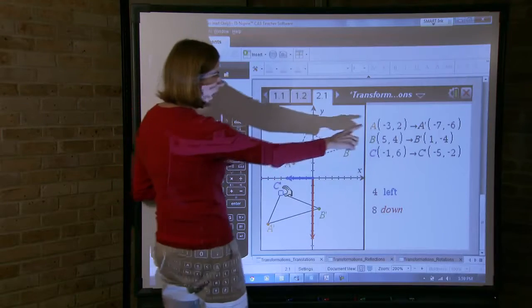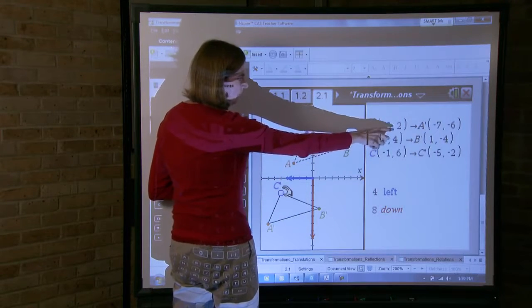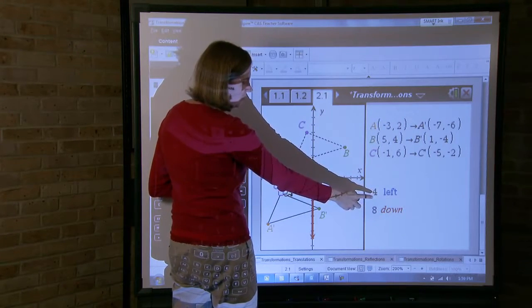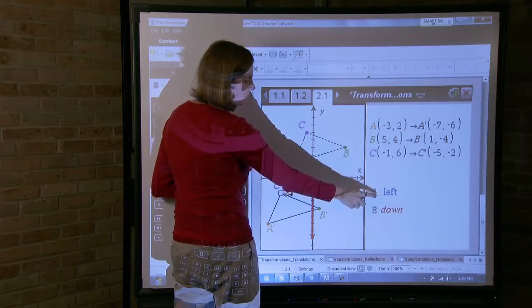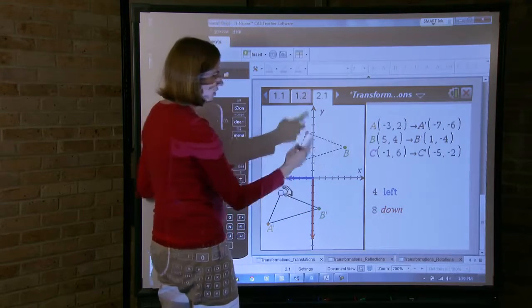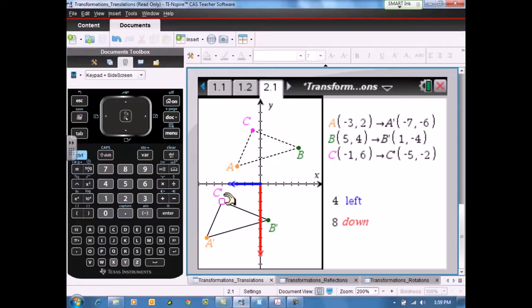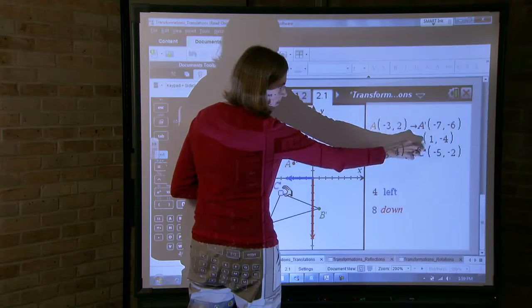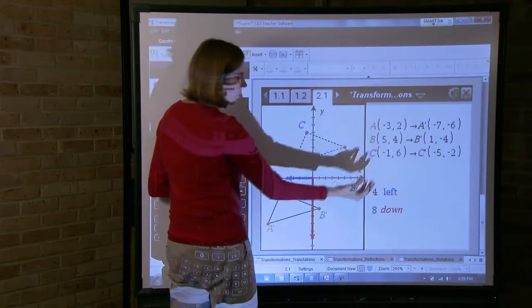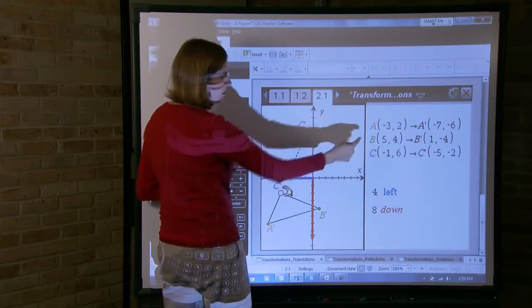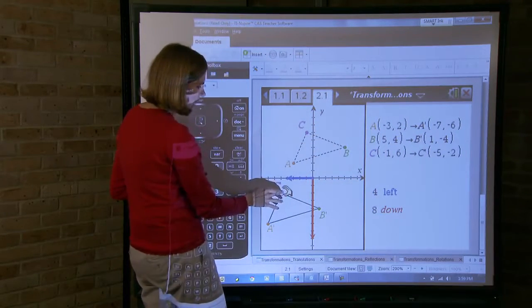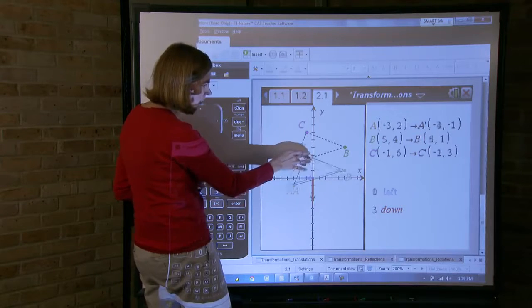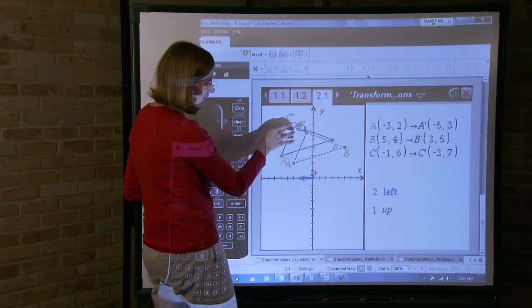Instead of just, if I have vertex A at negative three, two, and I move, I translate the triangle four to the left and eight down, then where will A prime be? We can get them to think backwards a little bit. So if I have vertex B prime at negative four, then what kind of translation do I need to do if I want B to be at five, four? How can I move one on top of the other?